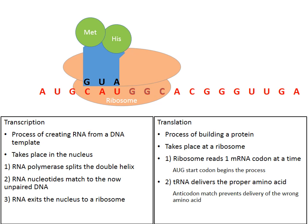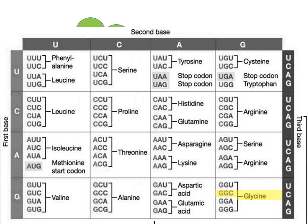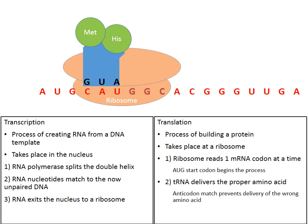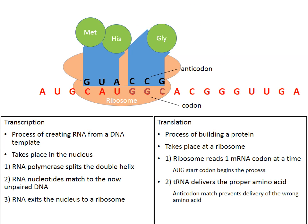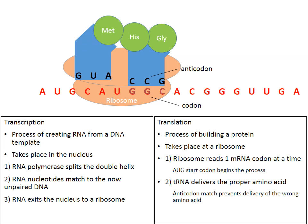The ribosome moves down one codon. GGC is now flashing. We look on the chart — GGC is the code for glycine. Transfer RNA is supposed to deliver glycine. But here comes a tRNA not delivering glycine. Notice how the anticodon UGC and the codon GGC don't match — they're not opposites. This prevents the wrong amino acid from being delivered. The wrong tRNA drifts away and the proper one comes in to deliver glycine. Now the amino acids are all chained together and the tRNA on the left drifts away.